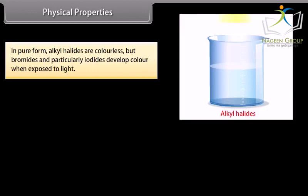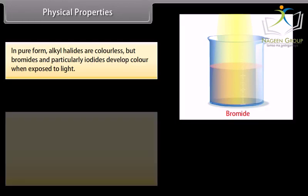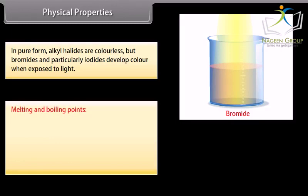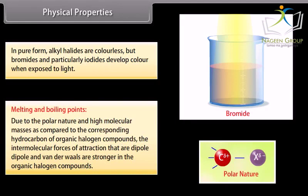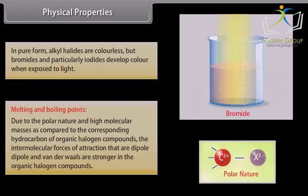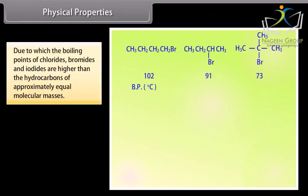Physical Properties. In pure form, alkyl halides are colorless, but bromides and particularly iodides develop color when exposed to light. Melting and Boiling Points: due to the polar nature and high molecular masses of organic halogen compounds, the intermolecular forces of attraction — dipole-dipole and van der Waals — are stronger, so the boiling points of chlorides, bromides, and iodides are higher than those of hydrocarbons of approximately equal molecular mass.